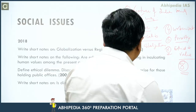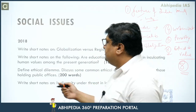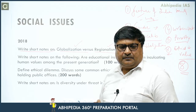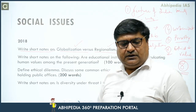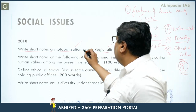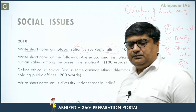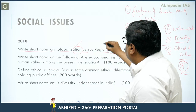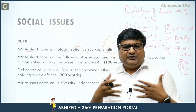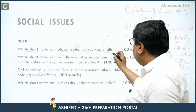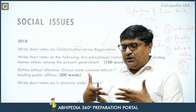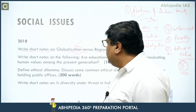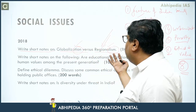Let us take the 2018 paper. The first question is: write a short note on globalization versus regionalism. Although there is some terminological controversy, regionalism is a centripetal tendency — a pull towards the local — while globalization is centrifugal, where boundaries break and you go outward. It is a simple question: give the definitions and provide a brief trend.